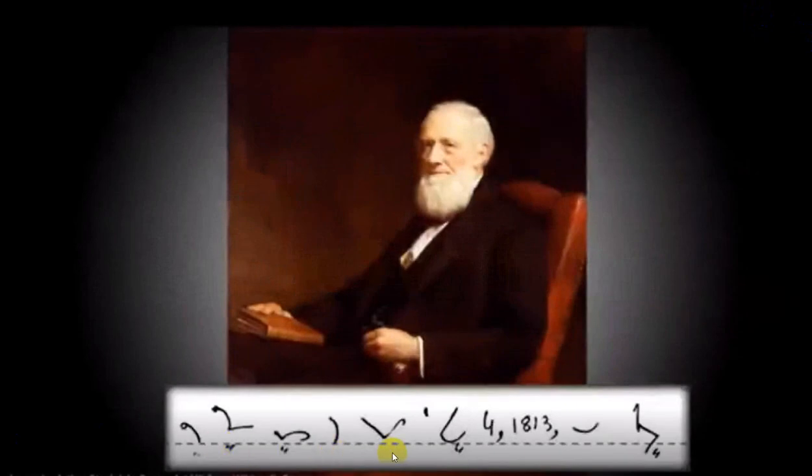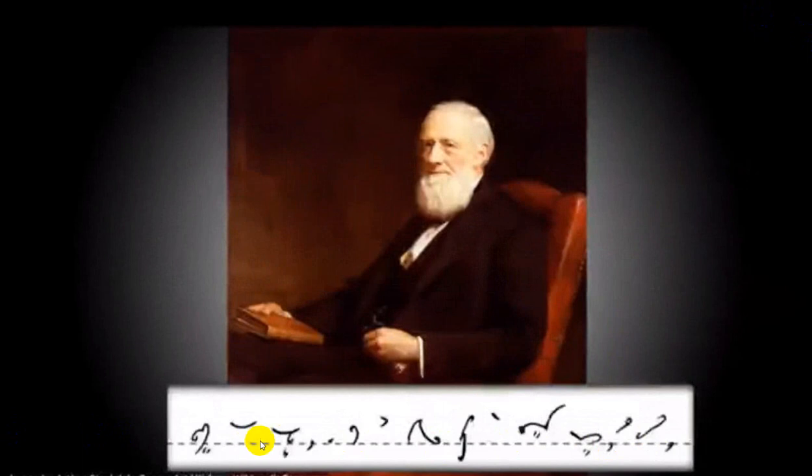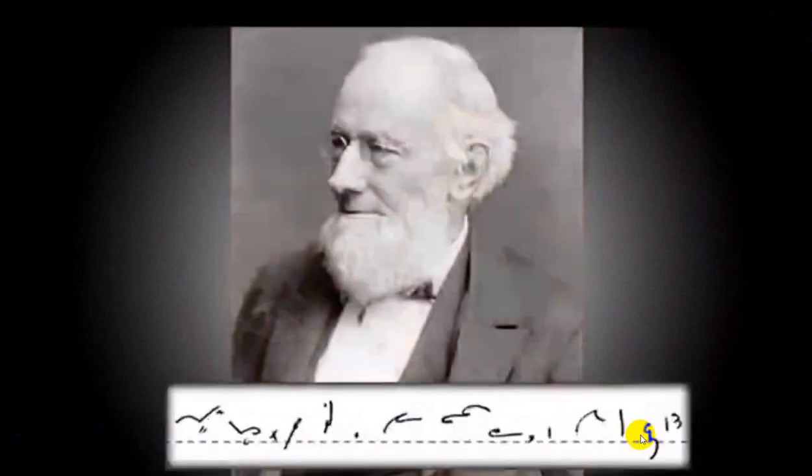Sir Isaac Pitman was born on January 4, 1813, in Trowbridge, Wiltshire in England, the third of the eleven children of Samuel Pitman and his wife, Maria Pitman.